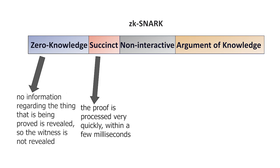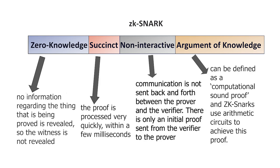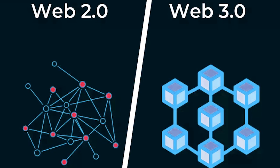ZK-SNARKs stands for zero-knowledge succinct non-interactive argument of knowledge. Zero knowledge means that no information regarding the thing that's being proved is revealed, so the witness is not revealed. Succinct means that the proof is processed very quickly within a few milliseconds. Non-interactive means that communication is not sent back and forth between the prover and the verifier.